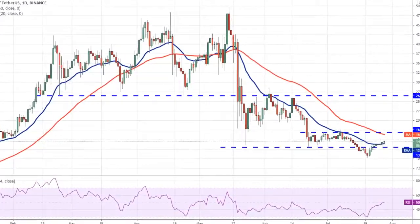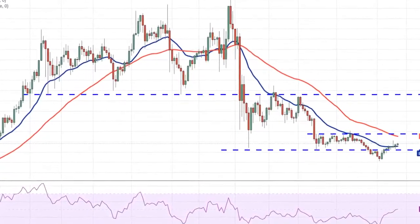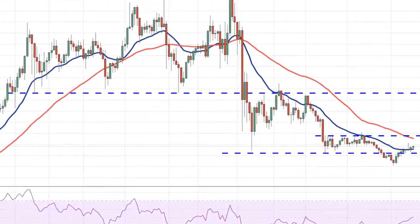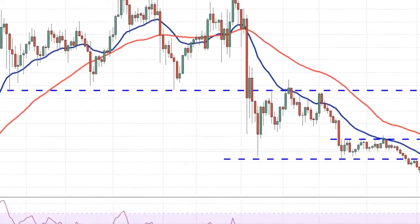Longer term, the panel predicts ETH could hit $17,810 by the end of 2025 and $71,763 by the end of 2030.